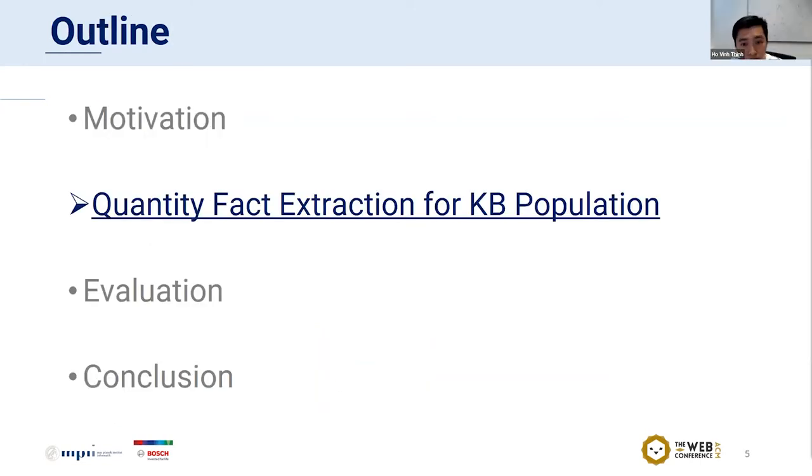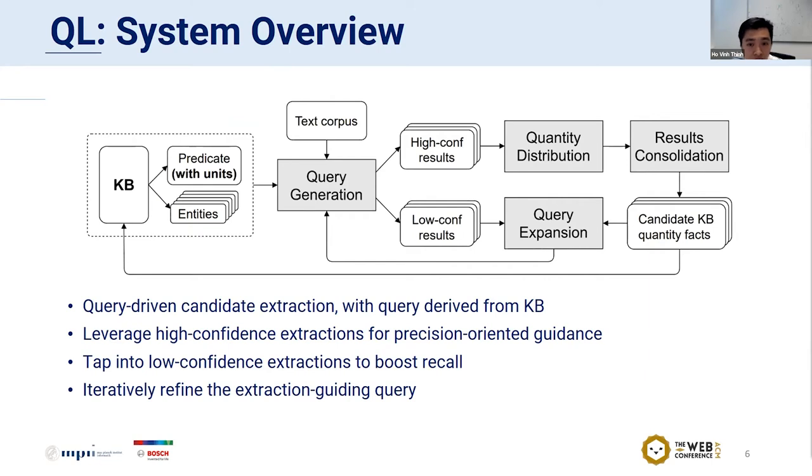Now we will describe our system. This is the overview of our system for quantity KB fact extraction, which is called QL. Our extraction method is query-driven, consisting of four main steps iteratively run in a loop. The main idea is that we maintain a query which describes the target predicate P, and the query can be derived from the KB. In each iteration, the query is used to extract information from the text collection. The high-confidence extractions can be sent to post-processing steps and then added to the KB, ensuring high precision. The low-confidence extractions can be used to boost recall by refining the query for the next iteration.